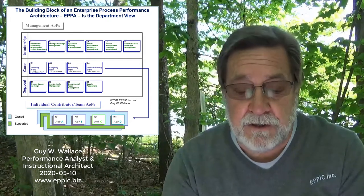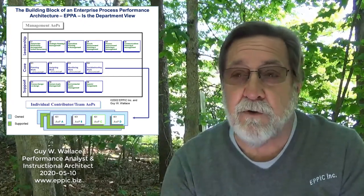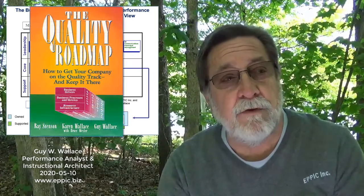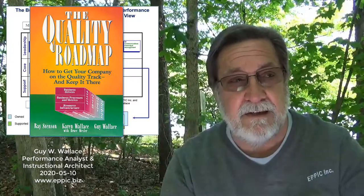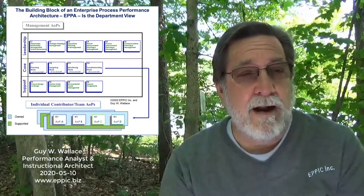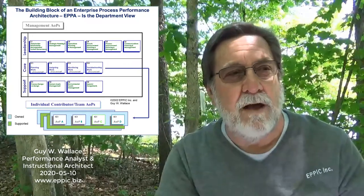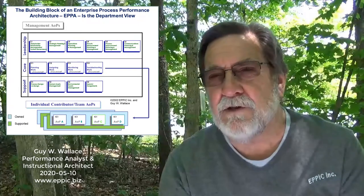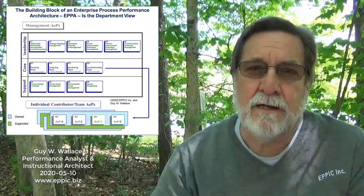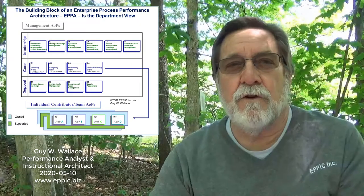This model is my version of something based on the work I did with my former business partners — the late Ray Svensson and my former wife Karen Wallace — as we worked on our 1994 book, The Quality Roadmap. This partially comes from work that Ray Svensson had done back at AT&T before he went out on his own as a consultant. We created this model as a small firm in the western suburbs of Chicago, having done just over 20 management analyses.